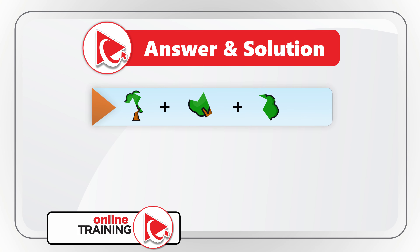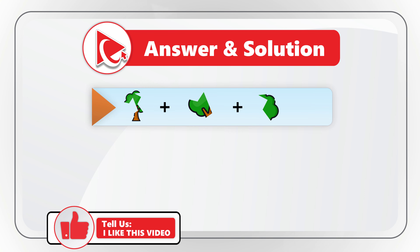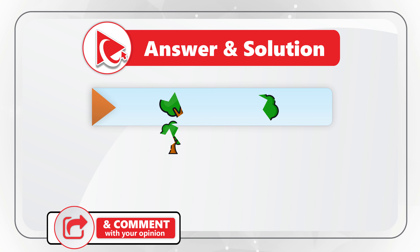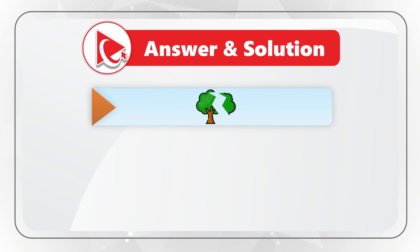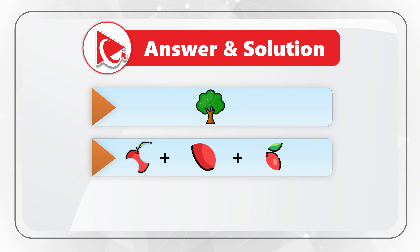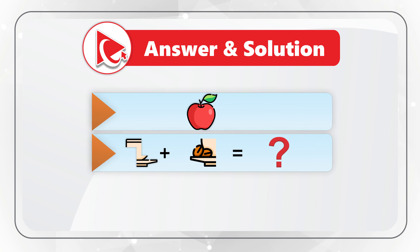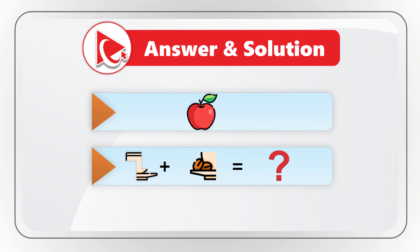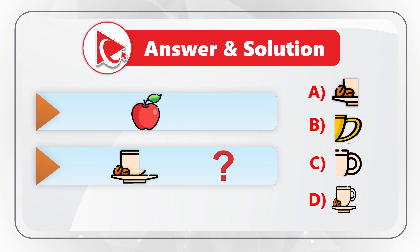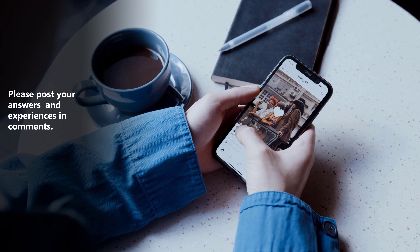The first set of objects represents a tree, but we do not see the final piece. If we rearrange the objects and combine them, we will create an equation which we typically see in our minds — three pieces of the tree create a complete final tree. The same is true for the second object, which represents an apple: if we rearrange and combine the objects, we get a very good-looking apple. Same is true for the third object, which represents a coffee cup with coffee beans. If we rearrange the objects and select the correct choice, which is choice C, we get a complete picture of a coffee cup and coffee beans. Did you figure it out? Please post your experiences in comments.